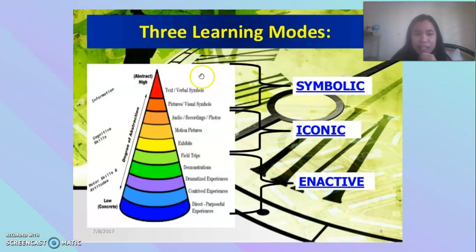It's just that in the cone of experience there are many levels, 10, and in the three-tiered model of learning by Jerome Bruner there are three. Both of them suggest that we should start with the concrete before proceeding to the abstract, so that the learners will understand the concept better. I hope you have learned something. Thank you so much, teachers. Have a good day.